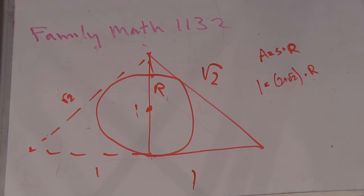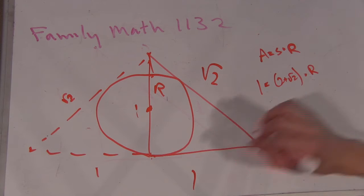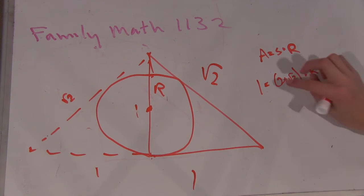Where does that 2 plus root 2 come from? Right, 2 plus 2 root 2 actually, because, or no, 1 plus root 2 because you have the semi-perimeter. Okay, 1 plus root 2 times r.